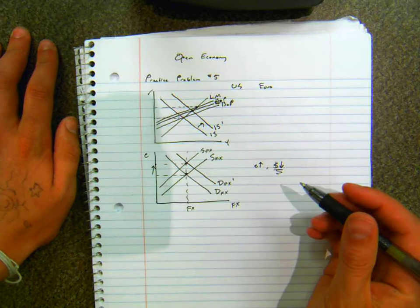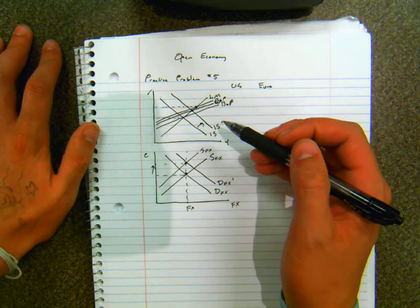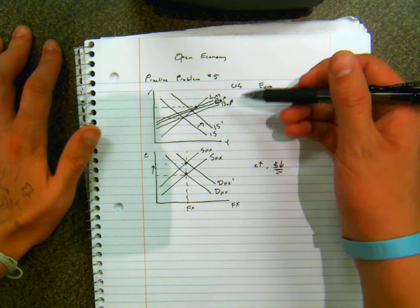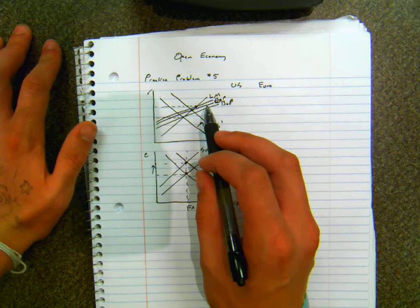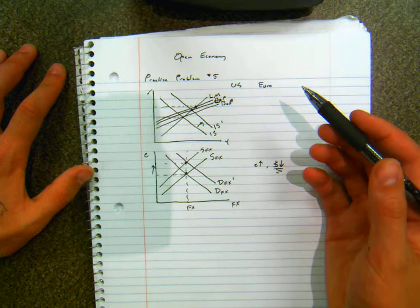So the other part of the question asks what happens if the exchange rate were fixed? Well here as you can see when the BOP adjusts it comes back slightly due to the change in exchange rate. If the exchange rate were fixed you wouldn't see the BOP curve shift back at all. It would just stay at this higher level. Which means that the BOP curve shifts to the left less in this scenario than if the exchange rate were fixed.